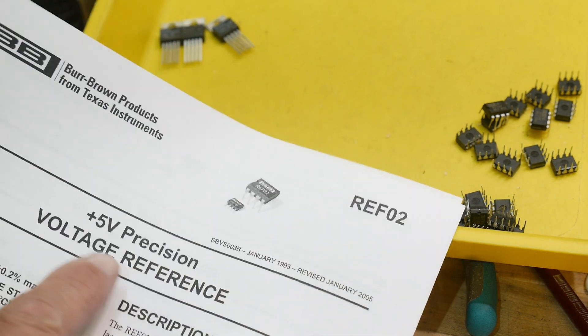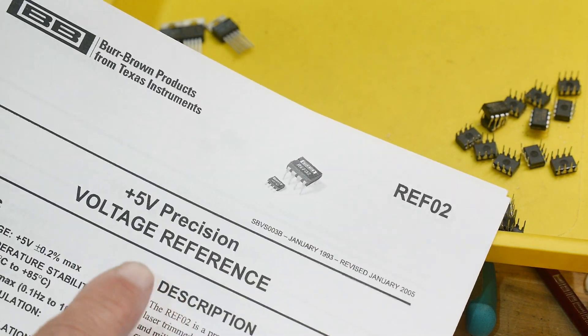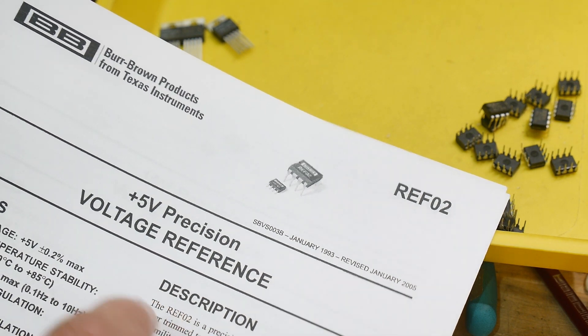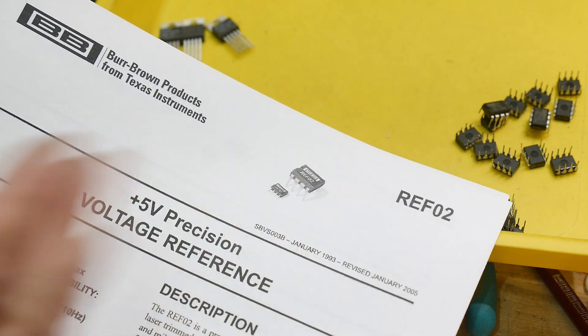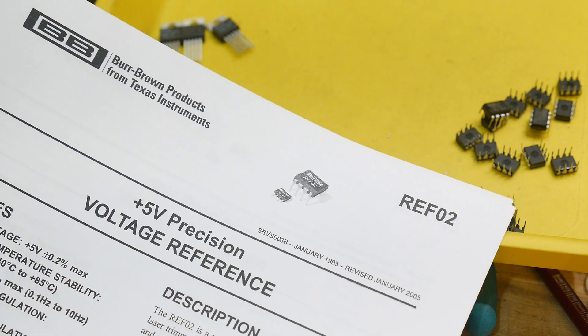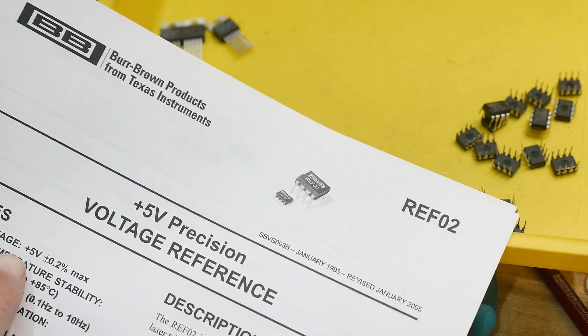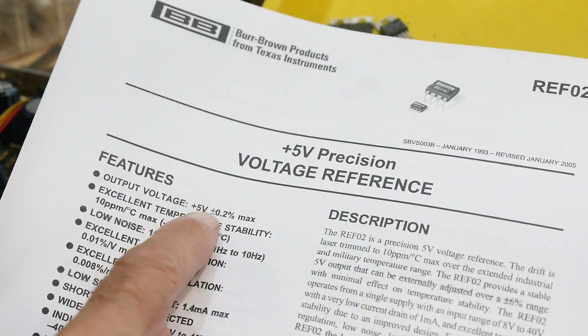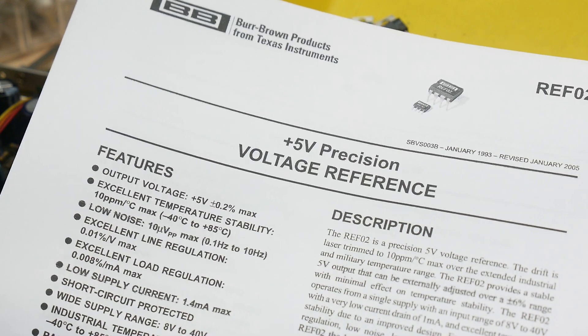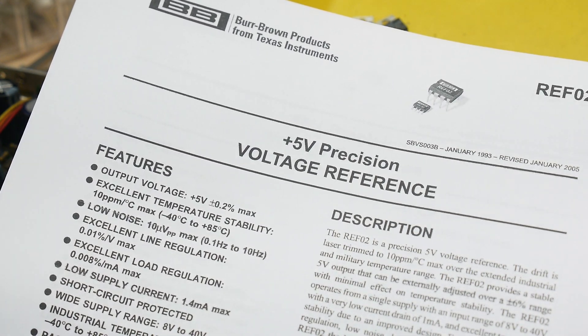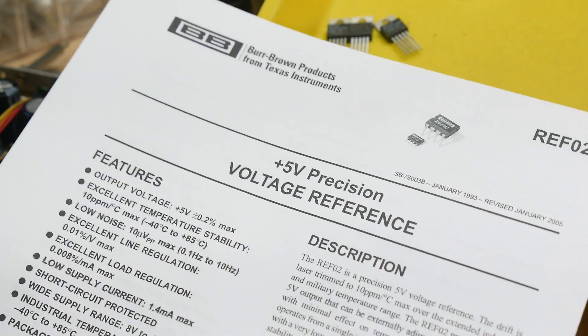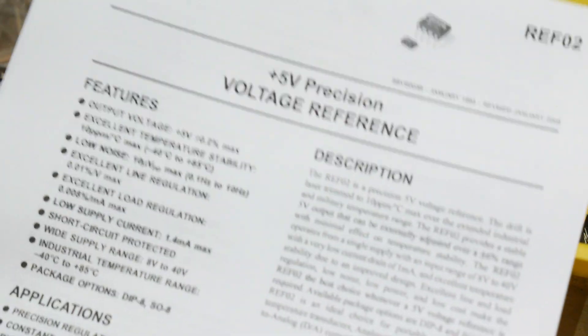Anyway, it is a 5 volt precision reference. And again, there are better things for absolute, but this is a—I mean better things for relative, but this is kind of an absolute number, right? This is the output voltage plus or minus 0.2, so not great, not great. And it's about a five dollar part.